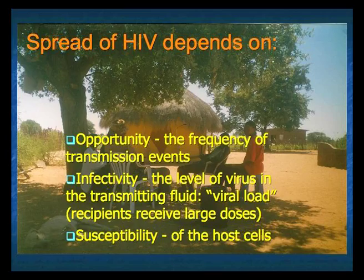The spread of HIV depends on three factors. First, opportunity — the frequency of transmission events; the more the virus is transmitted, the more virulent it becomes. Second, infectivity — the viral load, which is the amount of virus in bodily fluids. If the transmitting partner has a high viral load, the receiving partner gets a large dose in any one encounter, making the transmitting person more infectious. Third, susceptibility of the host cell, which can be negatively affected by malnutrition.